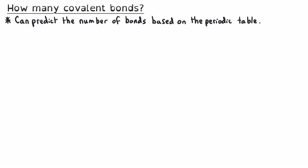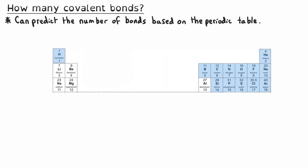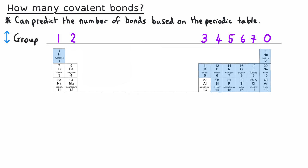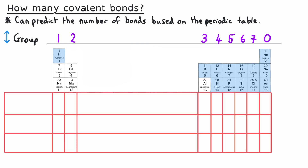You can predict the number of covalent bonds an element will form based on its position in the periodic table. If we take the first 18 elements of the periodic table, we need to remember that their vertical columns are called groups, numbered 1, 2, 3, 4, 5, 6, 7, and 0. The group number is the same as the number of electrons an element has in its outer shell, sometimes called its valence shell.